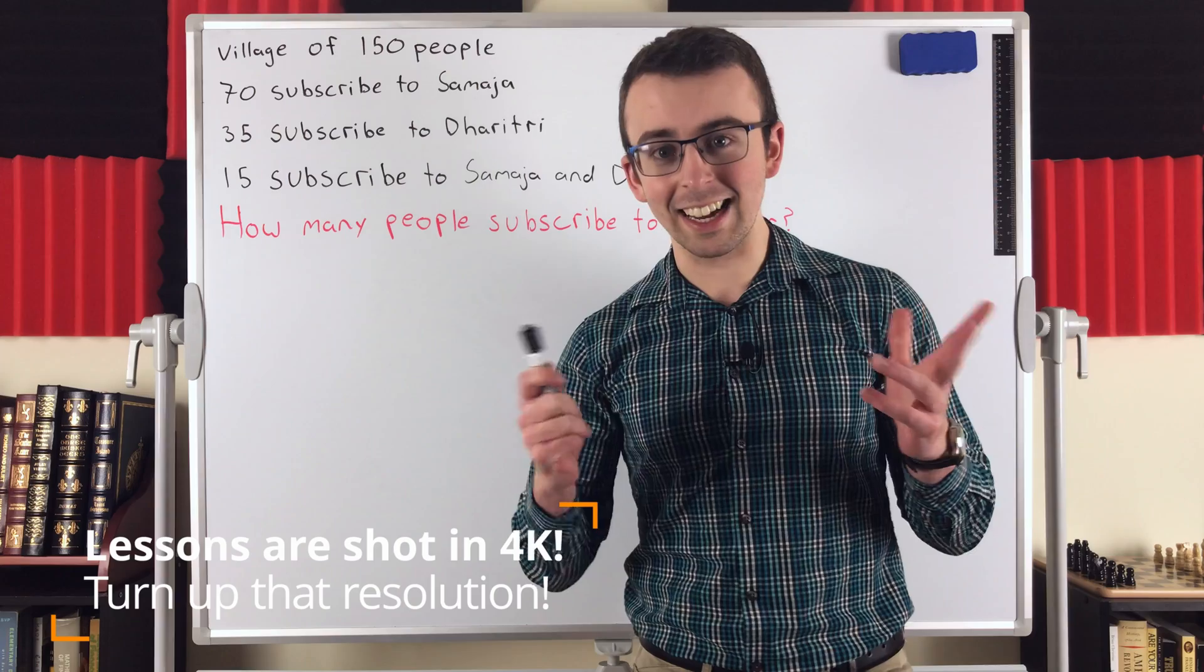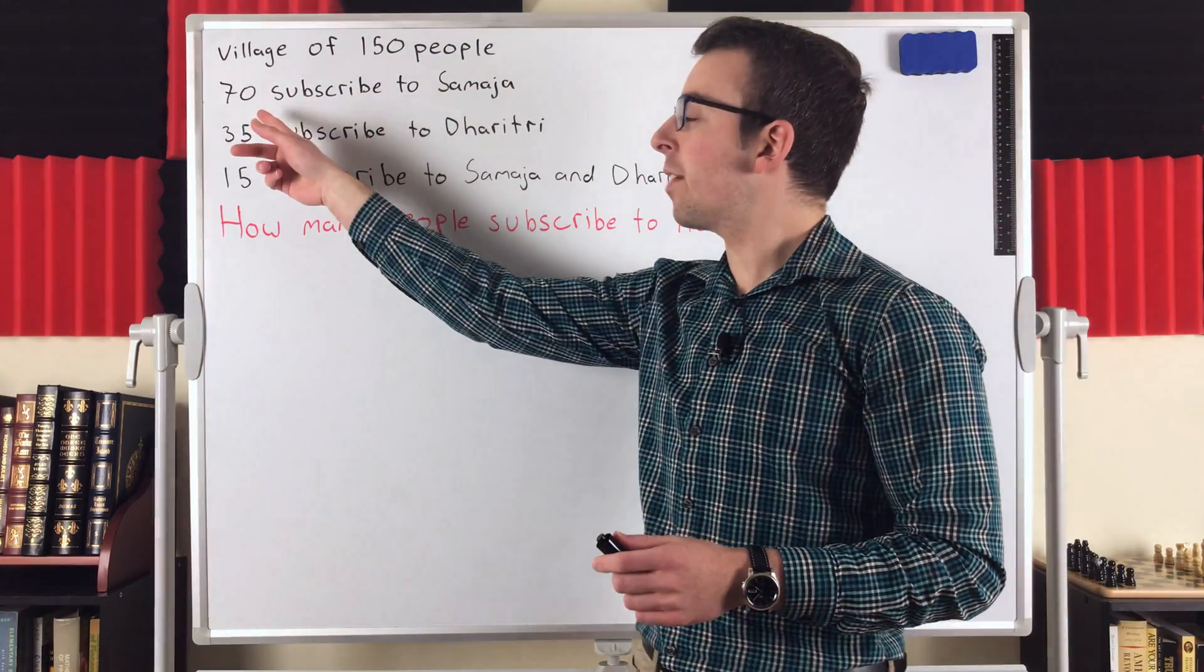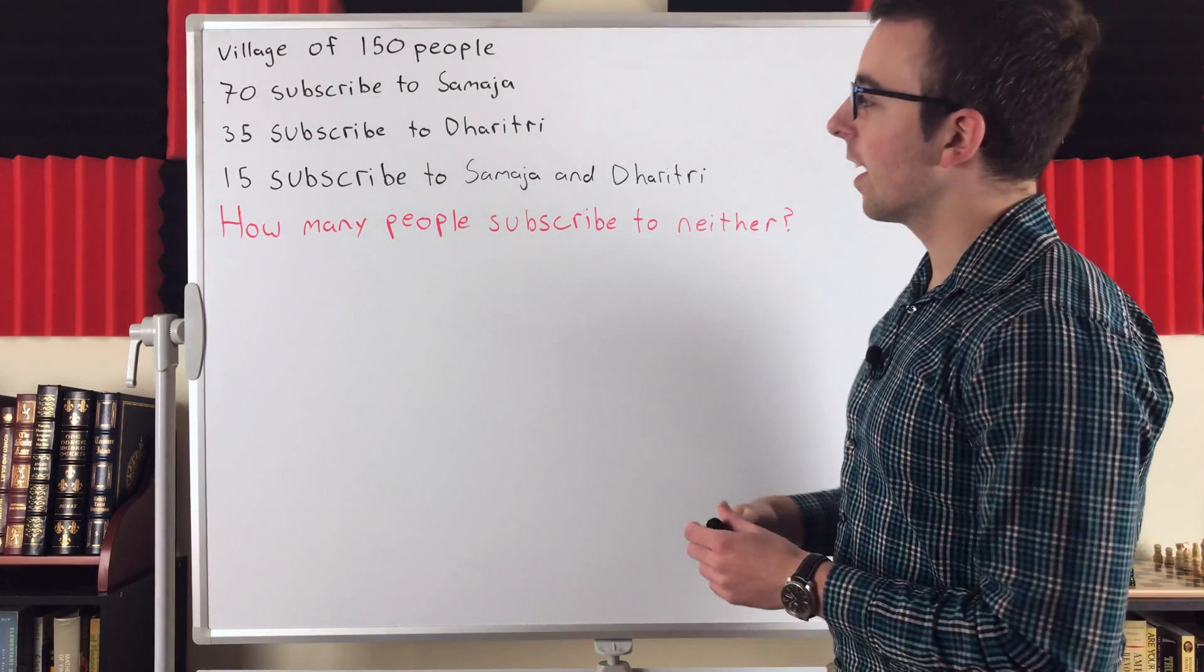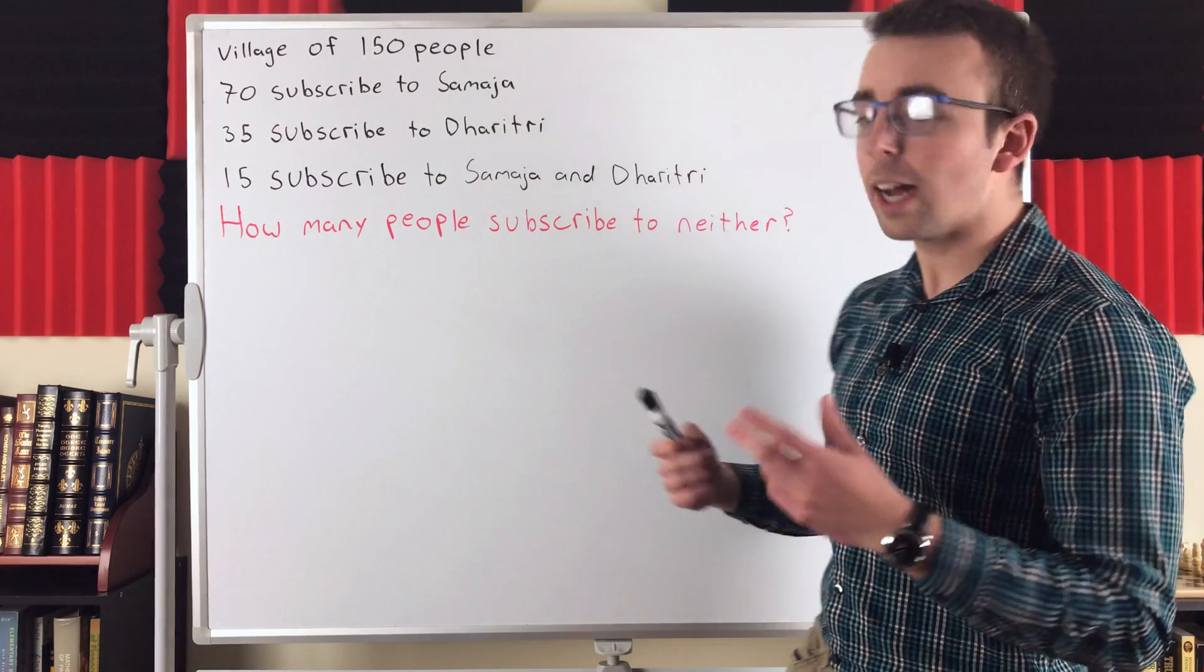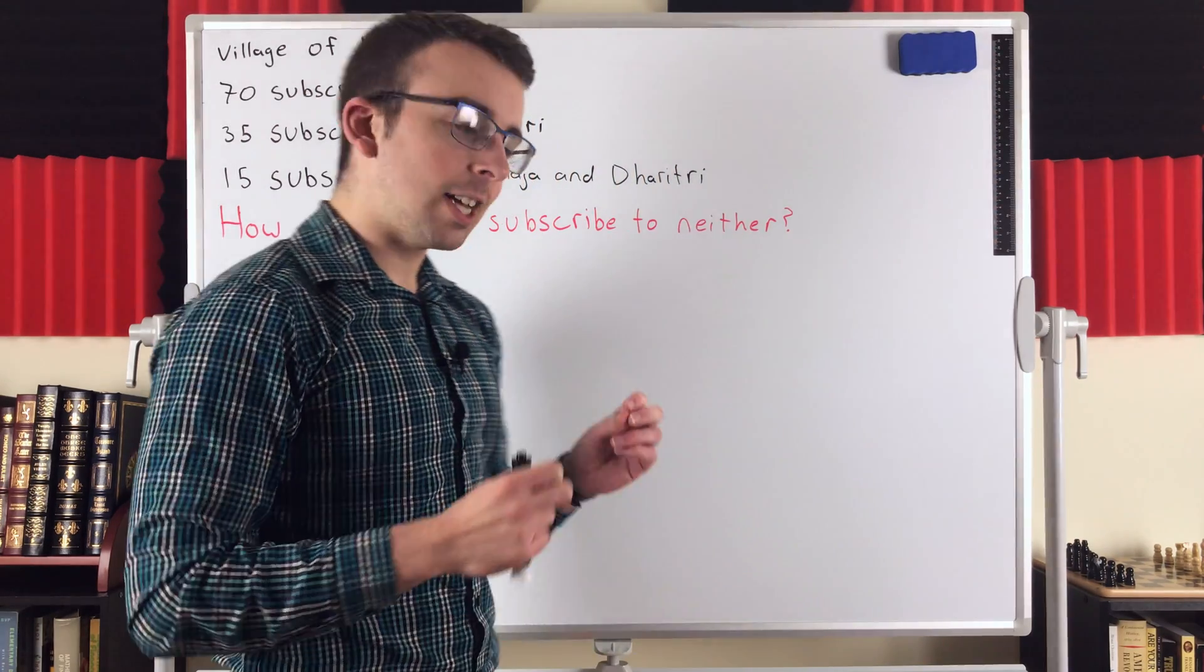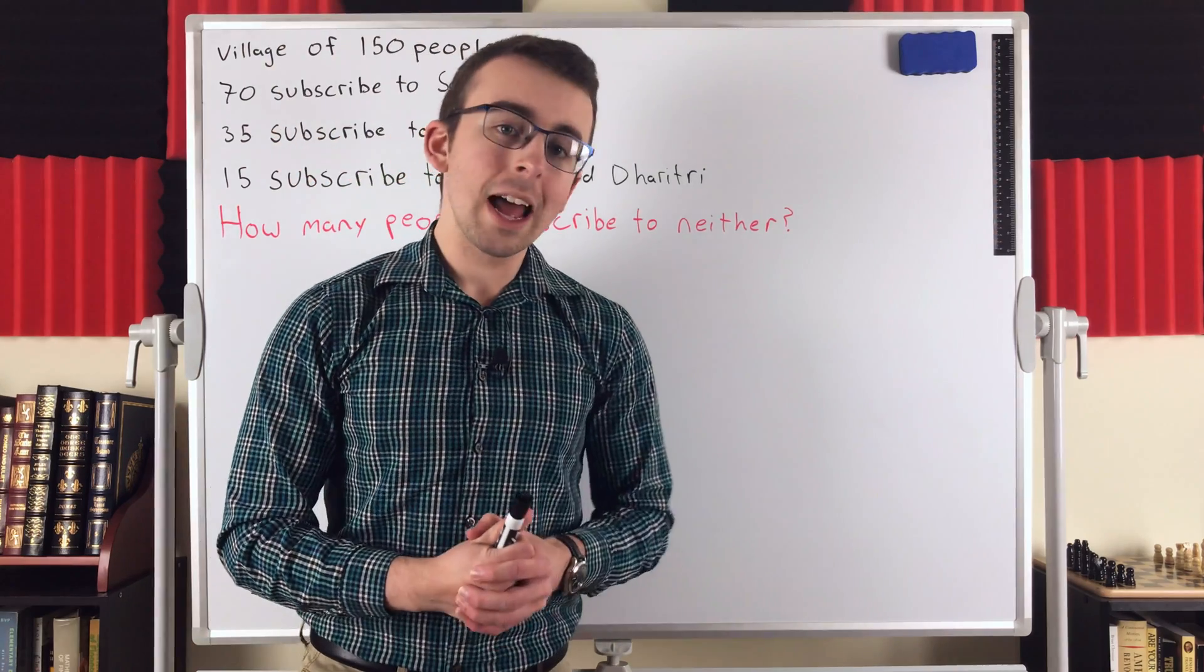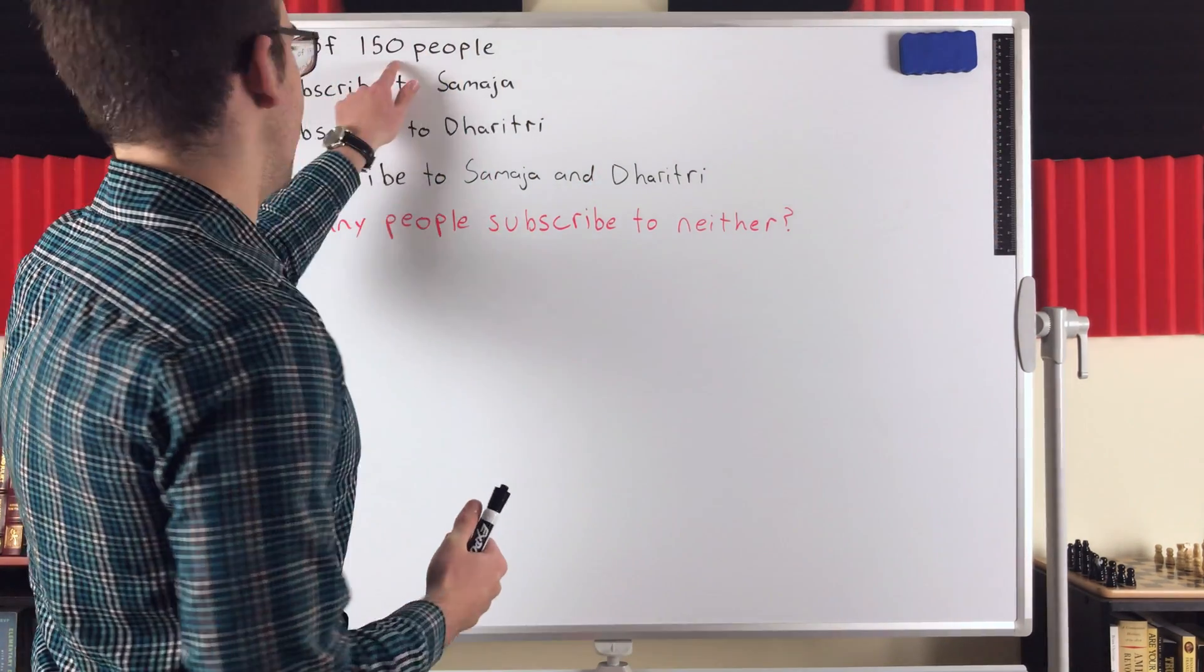The problem takes place in India. We've got a village of 150 people. 70 of these people are subscribed to the Samaja, which is a daily newspaper in Odisha, India. 35 people are subscribed to Dhritri, another daily newspaper, and 15 people are subscribed to the Samaja and Dhritri. The question we want to answer is how many people subscribe to neither paper? How many people are not subscribed to a paper in this village?